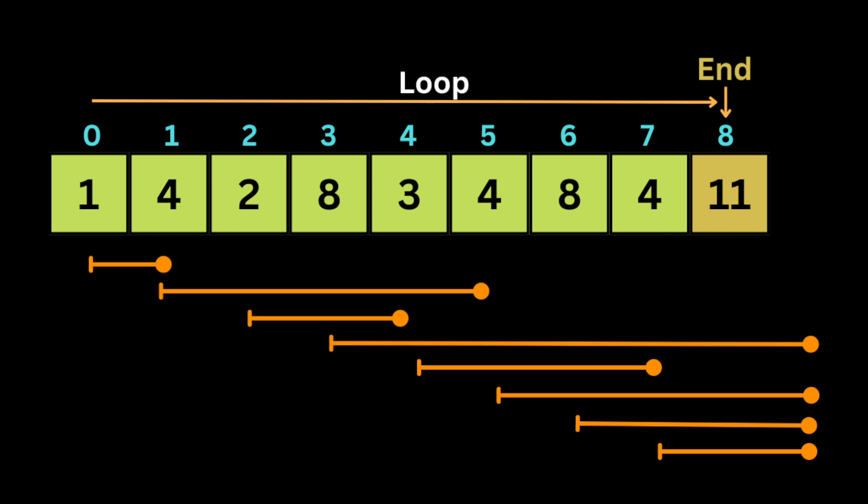Next we have 2, which means we can jump two steps forward to index 4. The next element is 8, so we can jump eight steps forward, which means we will pass the last index of the array. Moving to the next number, 3, we can jump three steps. The next number is 4, so we can jump four steps forward. Finally, we have 8, 4, and 11 — each number represents the maximum reach we can achieve.